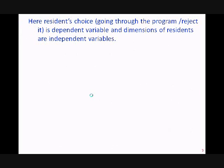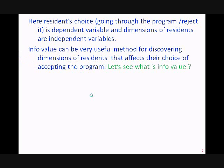The resident's choice of accepting or rejecting the program is the dependent variable, and the dimensions or characteristics of the resident are the independent variables. What is required is to find those characteristics which can be used to predict the resident's choice, so that it can be used for prediction at a later stage.